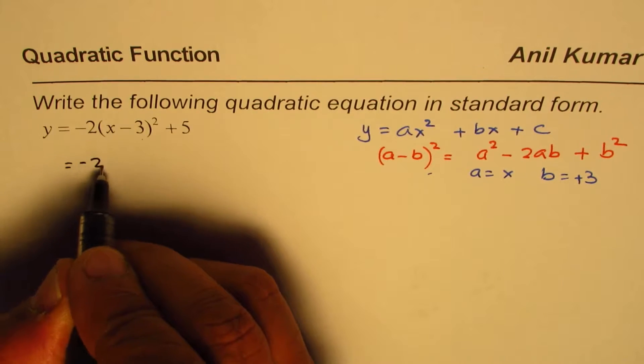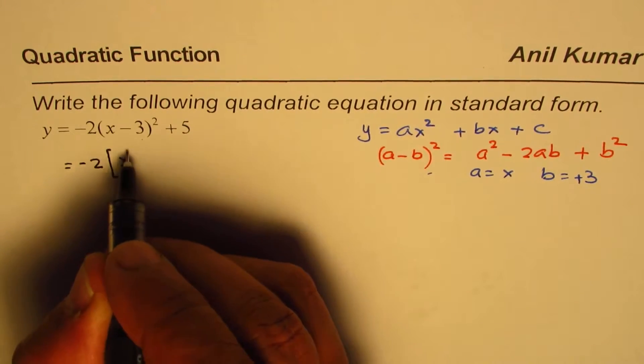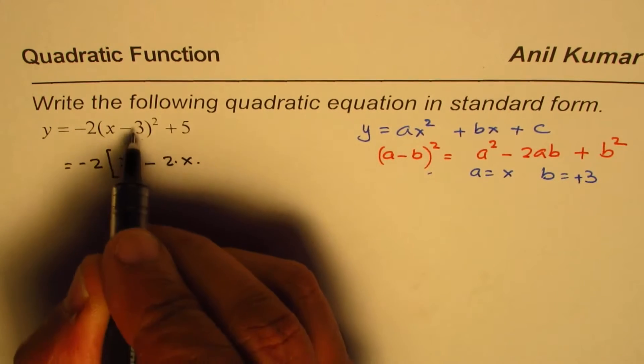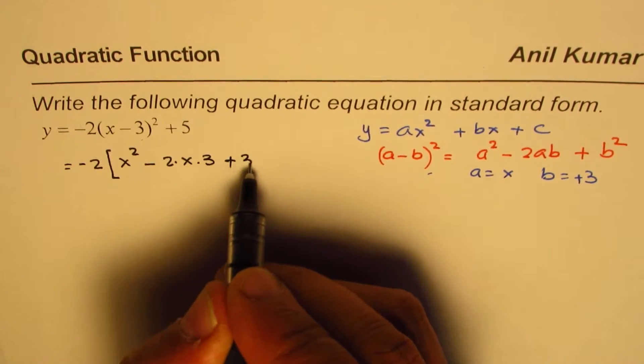We have minus 2 times x minus 3 whole square. This could be written as x square minus 2 times x times 3 plus 3 square.